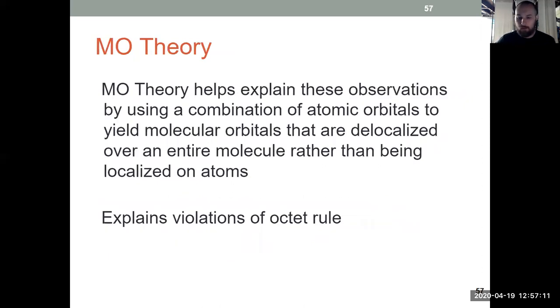So what MO theory does to explain the magnetism, the paramagnetism of oxygen, is it uses atomic orbitals still, combines them together, kind of like hybridization, except instead of producing hybridized atomic orbitals that are unique to individual atoms, we yield new molecular orbitals that belong to the entire molecule. So the electrons are kind of delocalized throughout the entire molecule. That makes more sense why we can do things like violate the octet rule, because those electrons can be in more places.